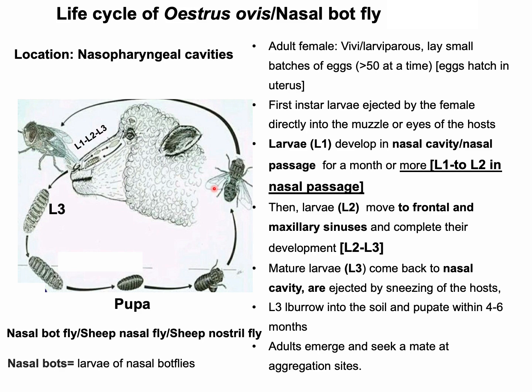Where flies are active throughout the year, two or three generations are possible. In cold or winter seasons, L1 and L2 stages become dormant in the nasal passages. When the warmer months arrive, the dormant larvae move to the frontal sinuses and become mature.